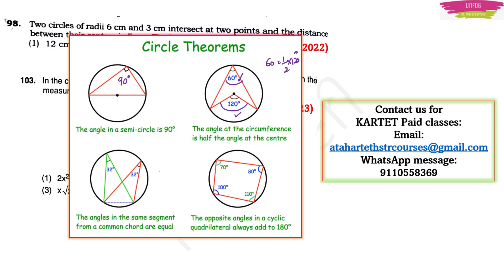Third important theorem: angles in the same segment from a common chord are equal. For example, if one angle is 32 degrees, all angles from that chord on the same side will also be 32 degrees. Fourth: opposite angles in a cyclic quadrilateral always add up to 180 degrees. You will have many more theorems from this chapter — paid class aspirants will know these; others can find them in 10th standard textbooks.